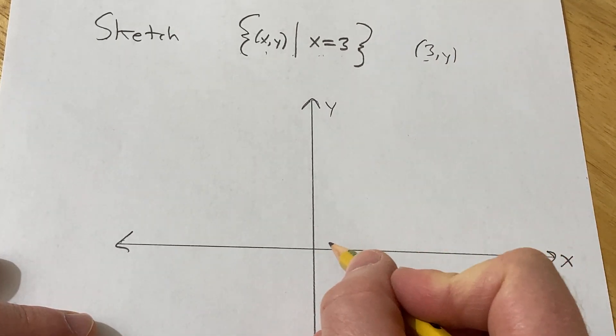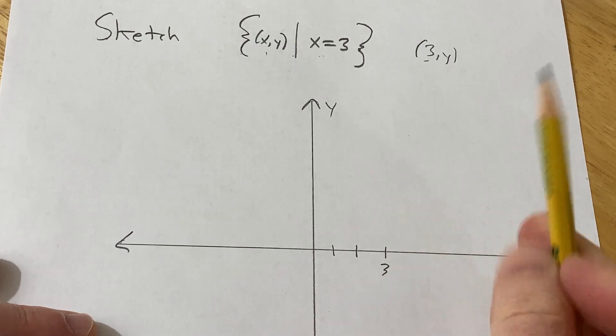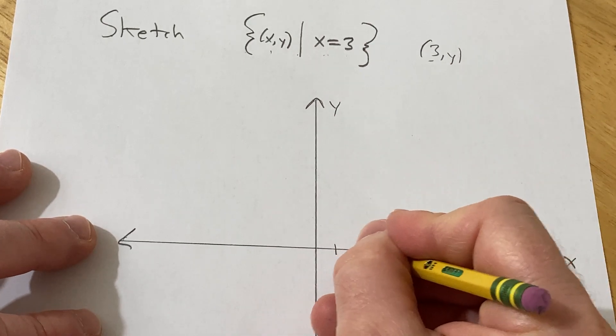Let's indicate 3 here: 1, 2, 3. This is 3, and perhaps my little tick marks aren't equidistant, not perfect.